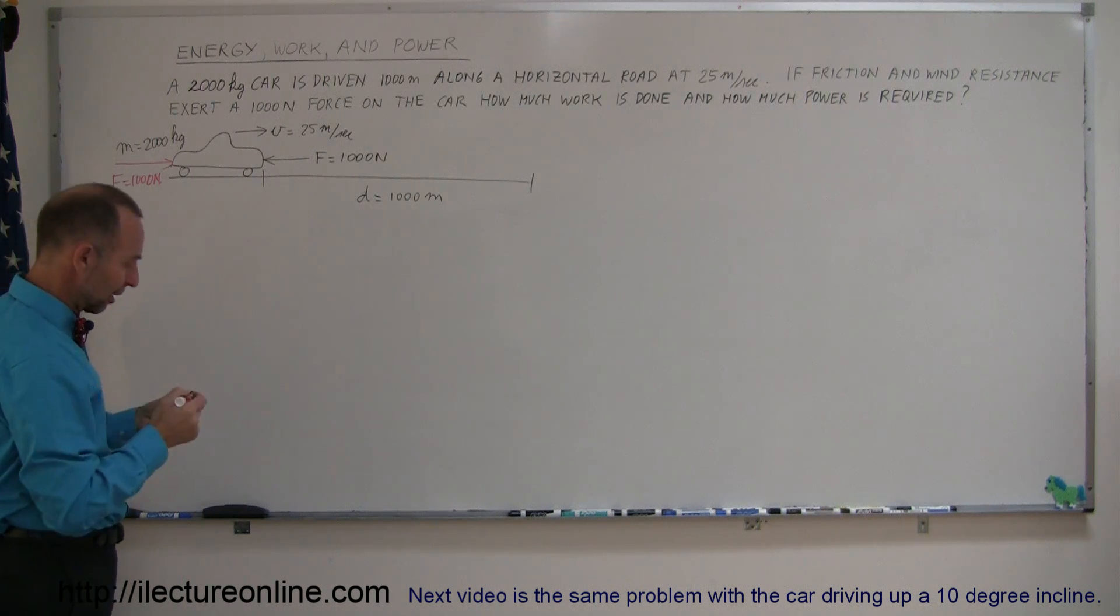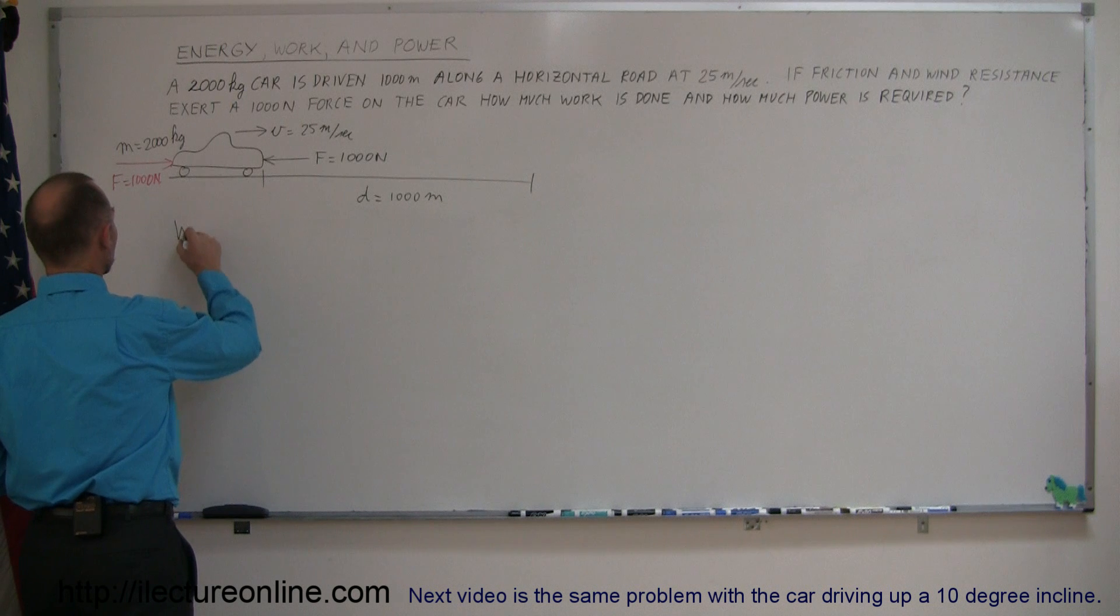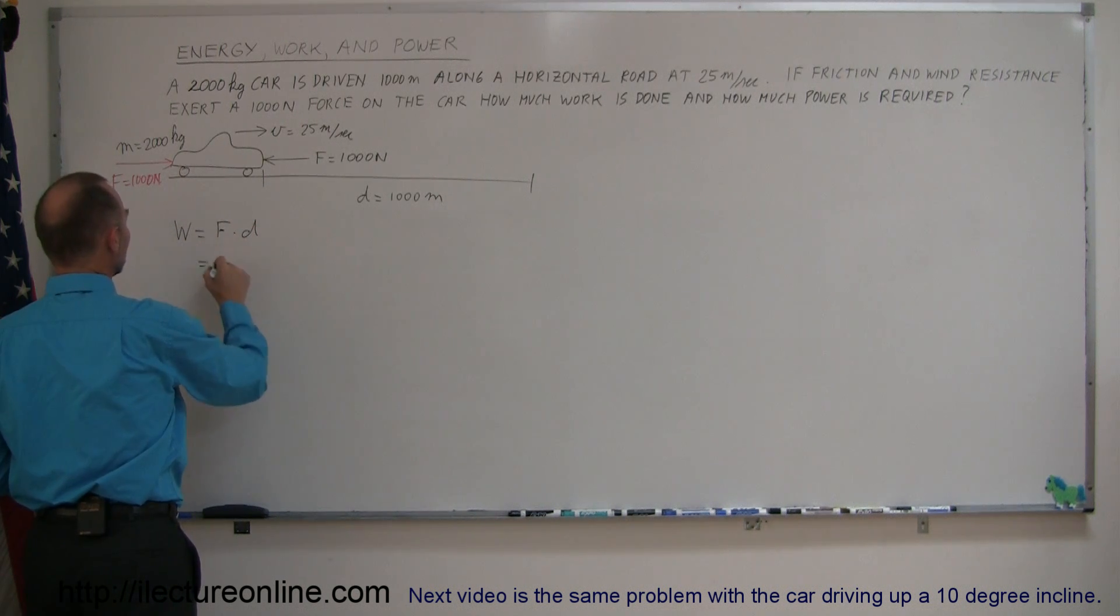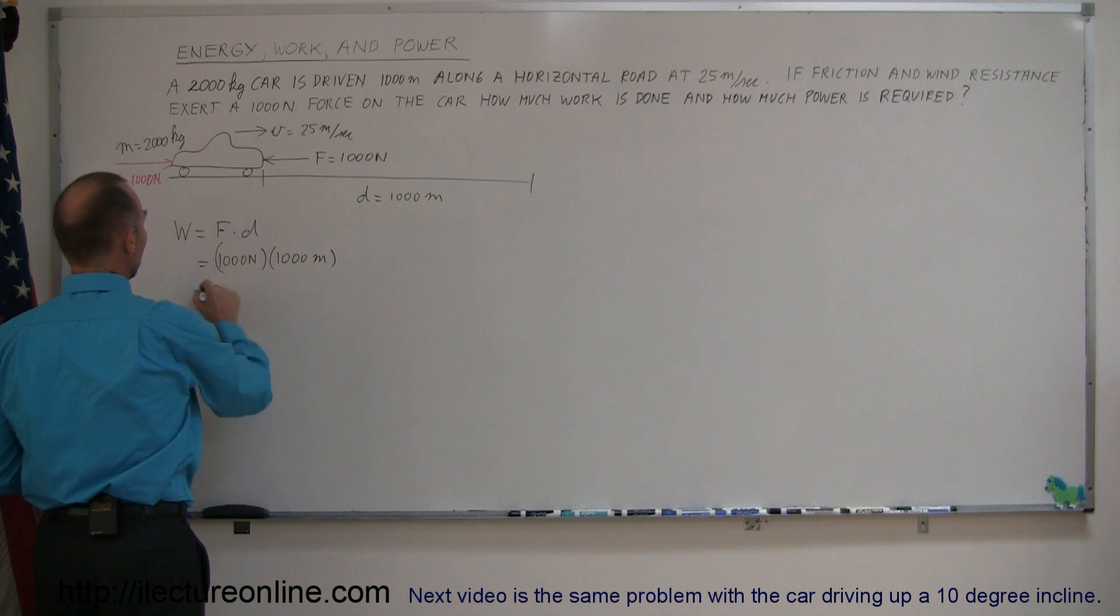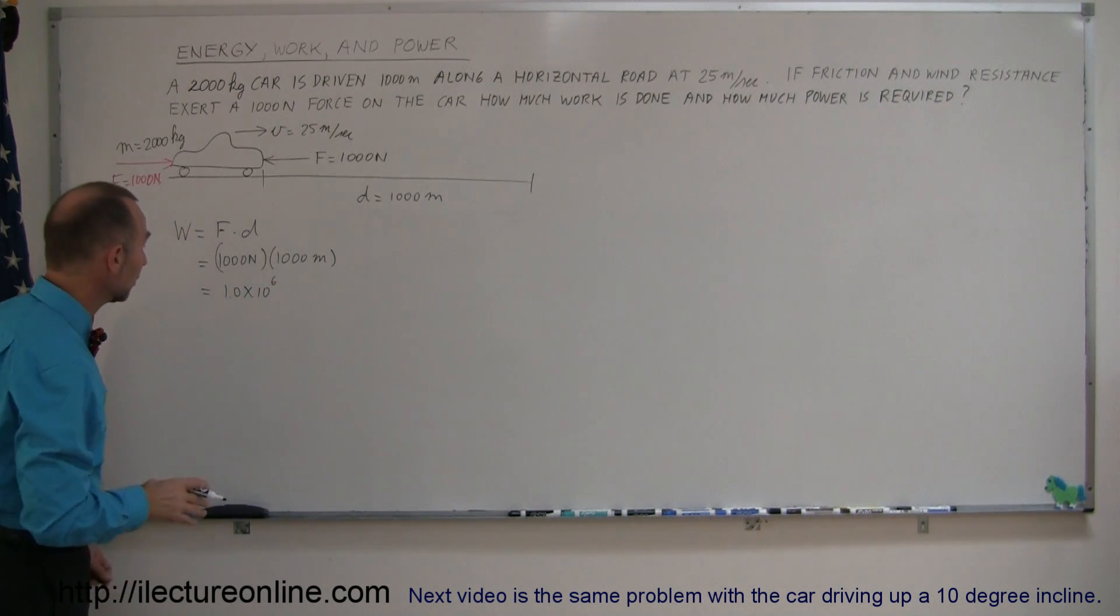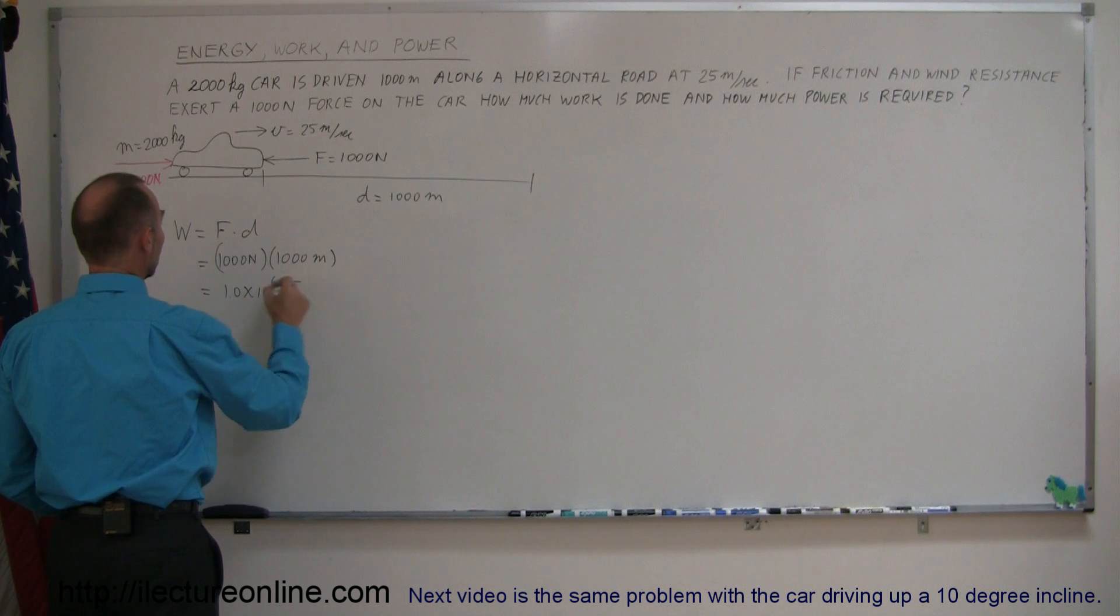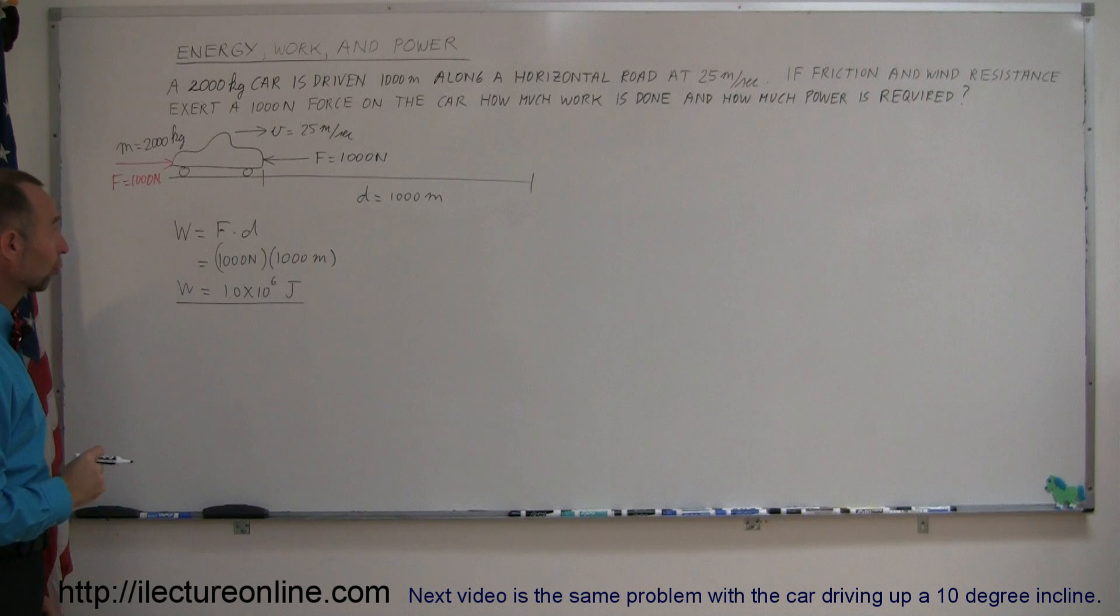And then, since we're asking for how much work is done, we can then say that the definition of work, work is equal to force times distance, and so we can say that's equal to 1,000 Newtons times the distance of 1,000 meters, and that's equal to 1 million, or 1.0 times 10 to the sixth. And of course, what are the units of Newton meters? That's the same as joules. So, the work done in this case is 1,000,000 joules, 1 times 10 to the sixth joules.